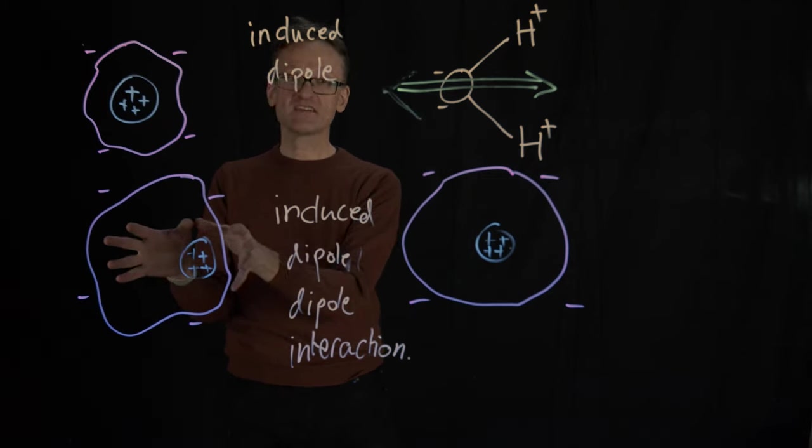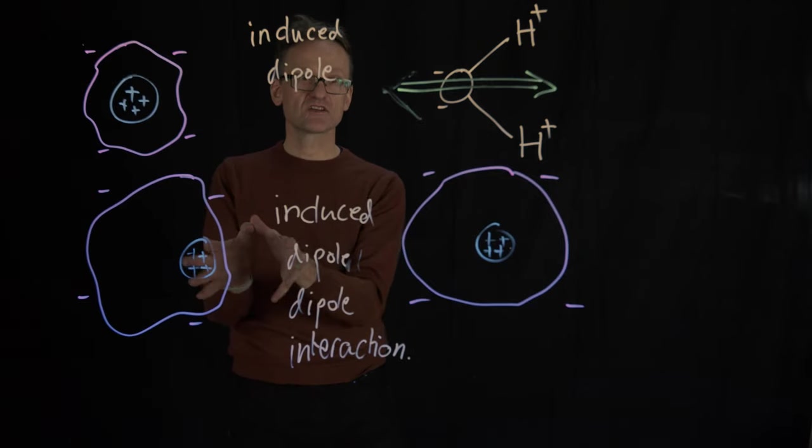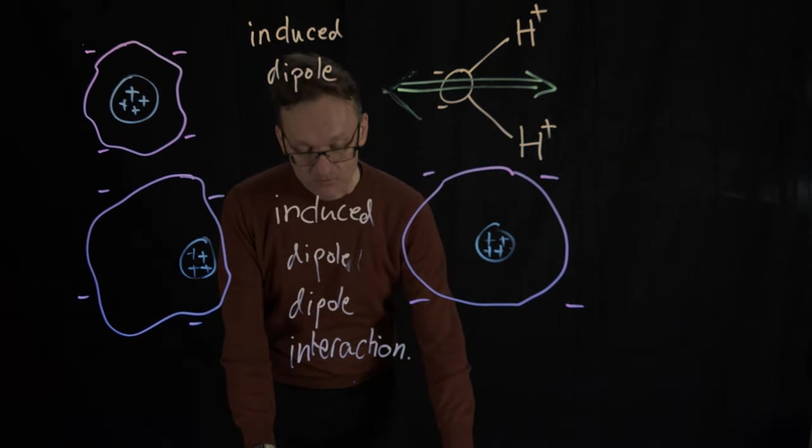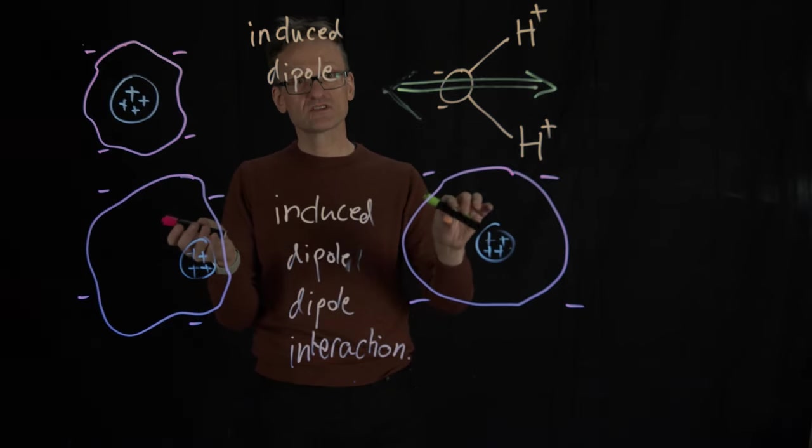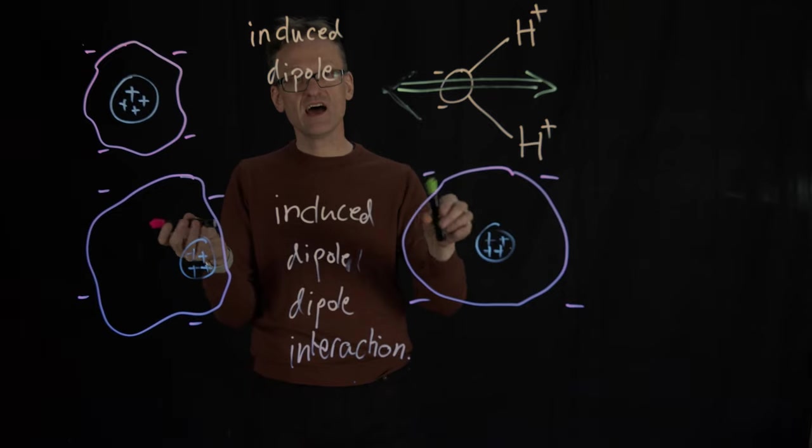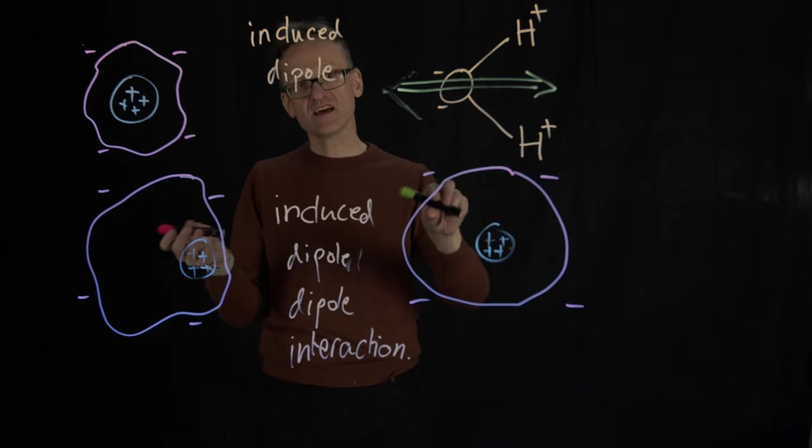And then a little point in time later they might have shifted in the opposite direction. And then this molecule will have to adapt. And what that's going to lead to is that you essentially have an interplay where these molecules start shifting around, but on average, at finite temperature, they tend to be aligned.